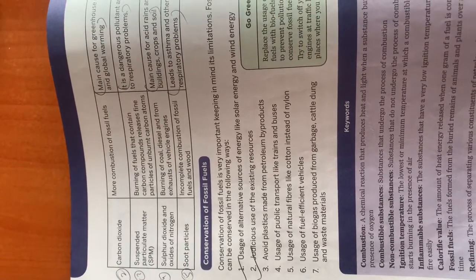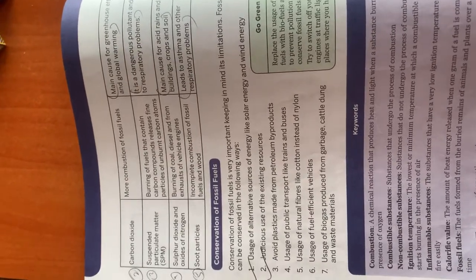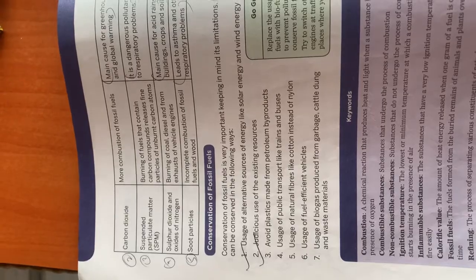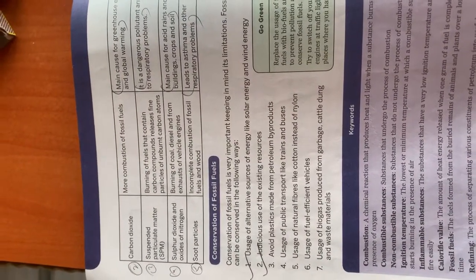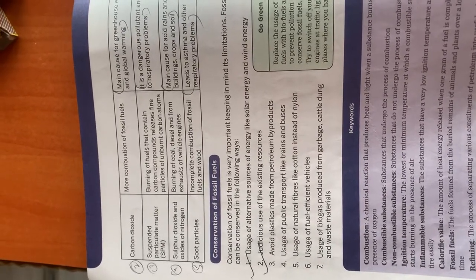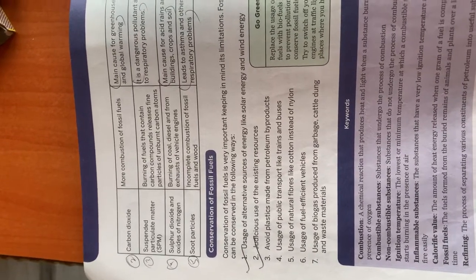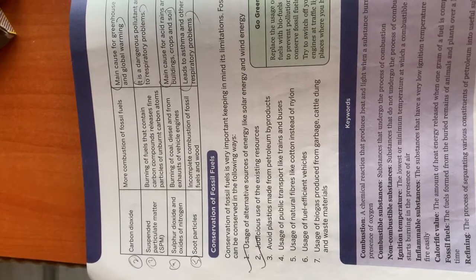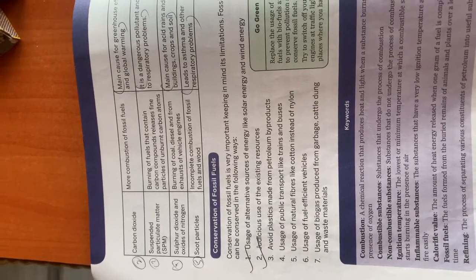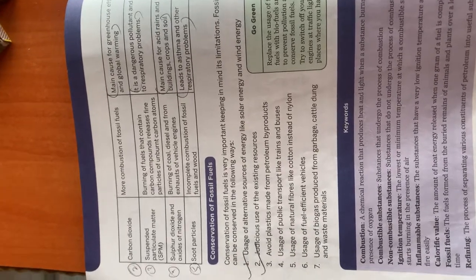We can use alternative sources of energy like solar and wind energy, which are inexhaustible. Other conservation measures include judicious use of existing resources, avoiding plastics, using public transport like trains and buses, using natural fibers instead of nylon, using fuel-efficient vehicles, and using biogas produced from garbage, cattle dung, and waste materials.